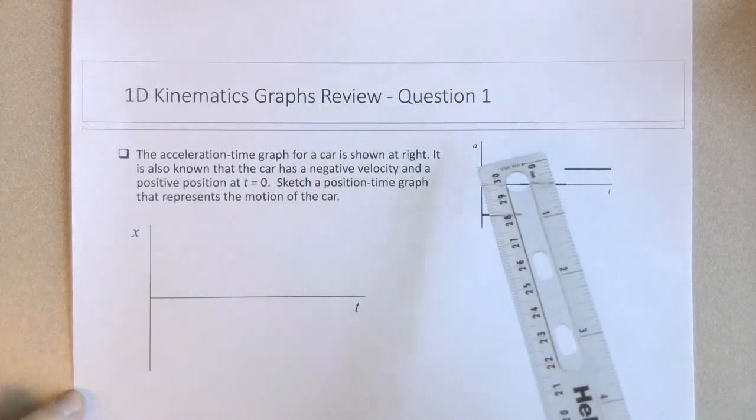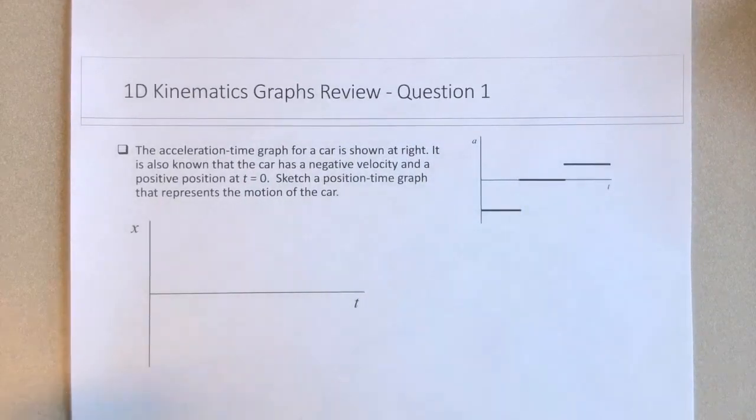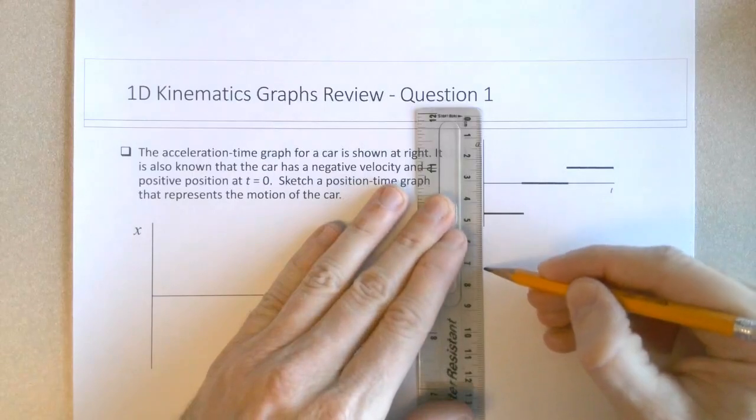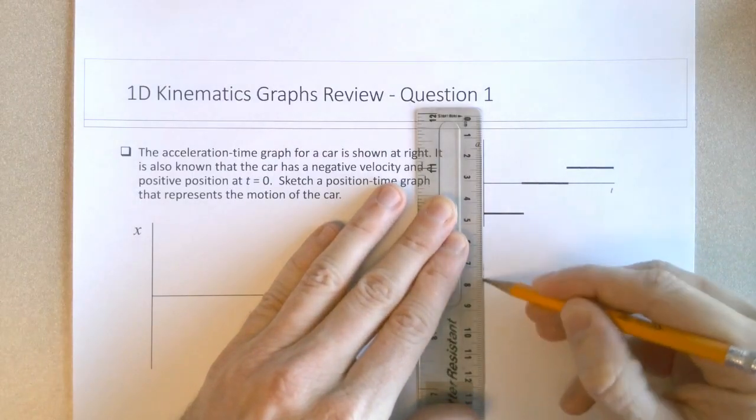So the first step I would do is to try to draw the Vt curve that corresponds to this At curve. So I draw the Vt curve, make a plot underneath the At. That will make things somewhat easier.